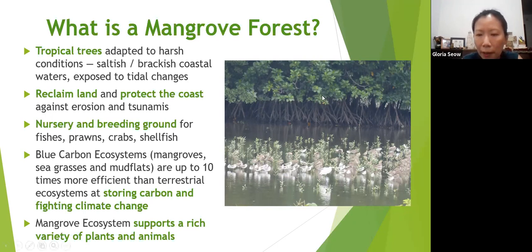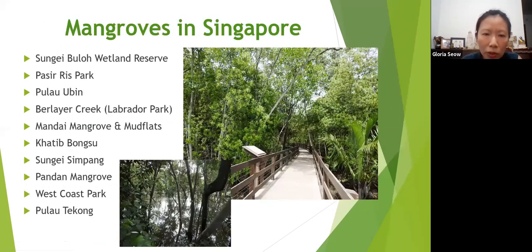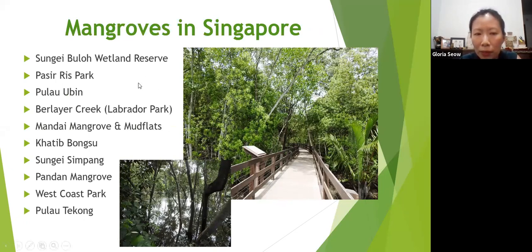You can see in this picture that the mangroves actually grow in brackish water. These are the roots you can see, and over here you can see all the little young mangrove saplings, and these are migratory birds. This is taken at Sungai Buloh. In Singapore, the most obvious mangrove site is Sungai Buloh Wetland Reserve. Pasir Ris Park has a small but compact and good mangrove area, as well as Pulau Ubin, Labrador Park, Mandai, and so on.